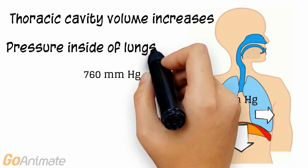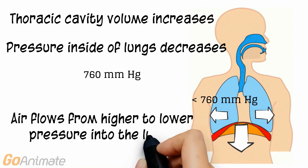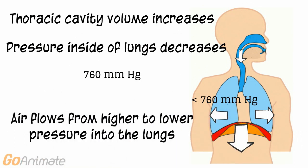Because the thoracic cavity volume increases, the pressure inside of the lungs decreases. Air then follows a pressure gradient and moves from higher to lower pressure.